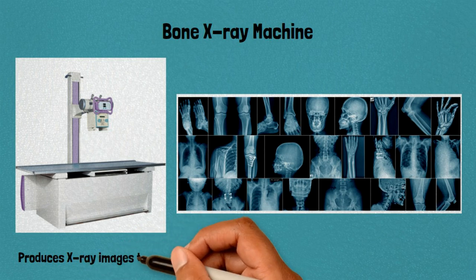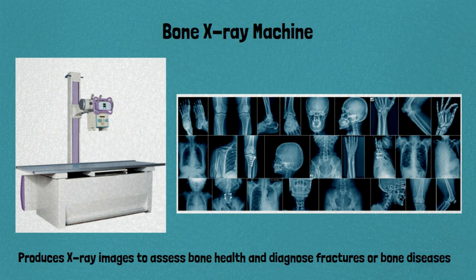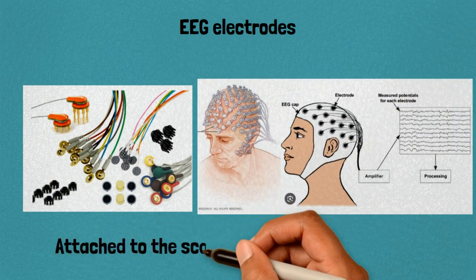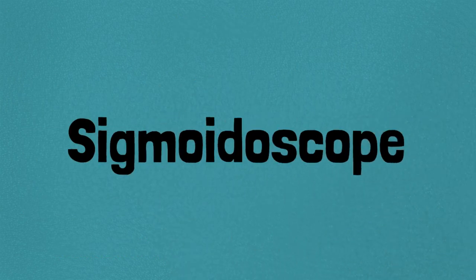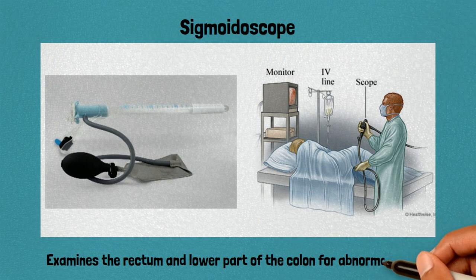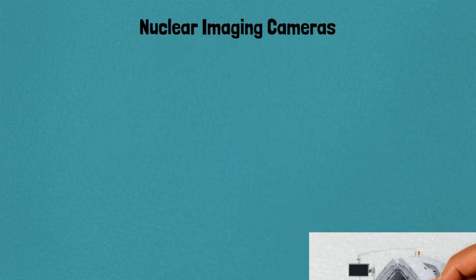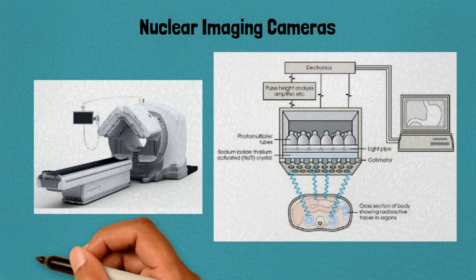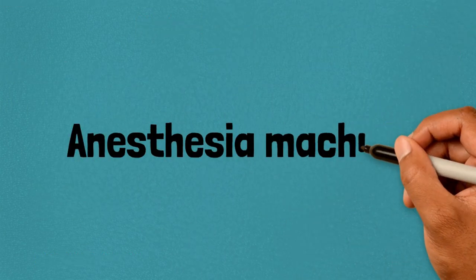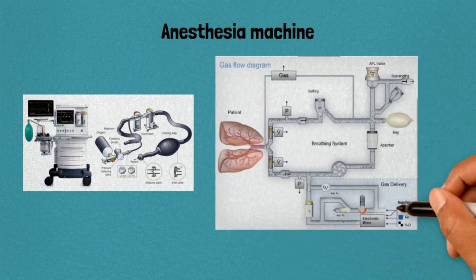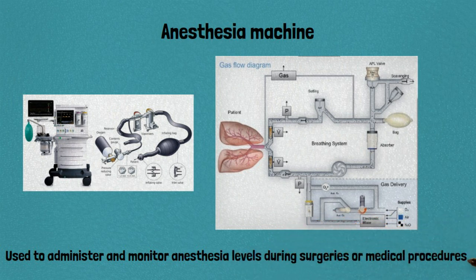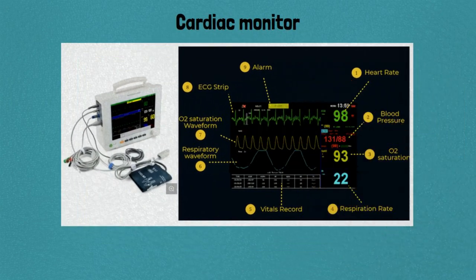33. Bone x-ray machine: produces x-ray images to assess bone health and diagnose fractures or bone diseases. 34. ECG electrodes: attached to the scalp to record brain activity. 35. Sigmoidoscope: examines the rectum and lower part of the colon for abnormalities. 36. Nuclear imaging camera: detects and visualizes radiation emitted by radioactive substances for diagnostic imaging.